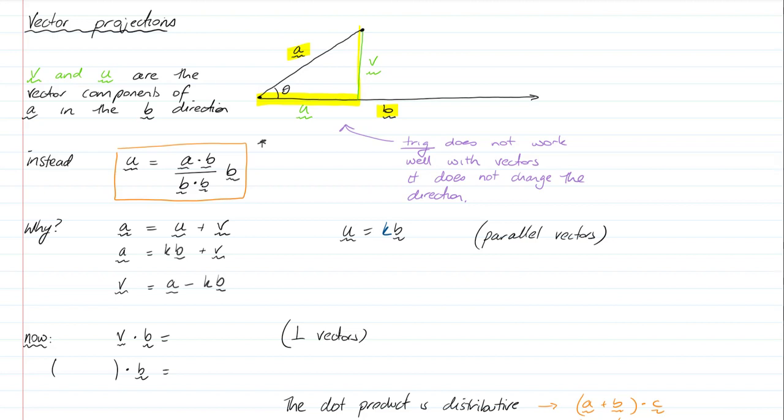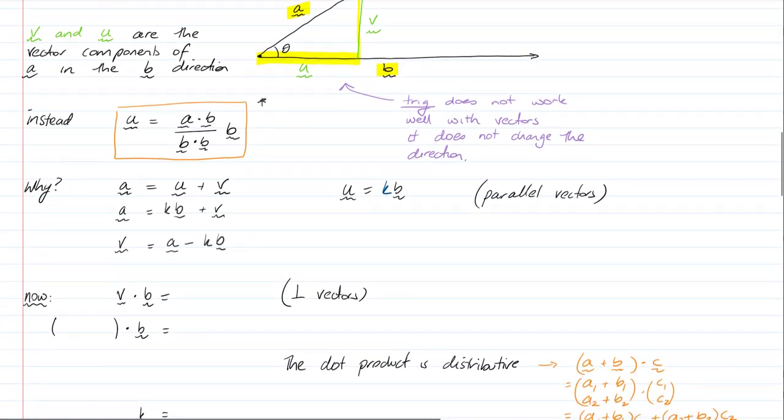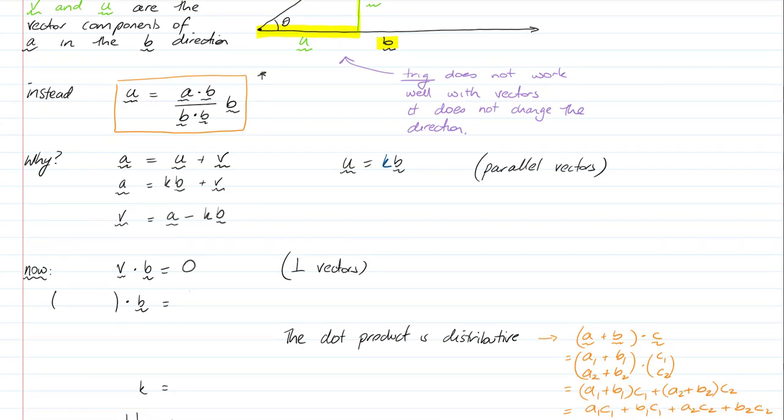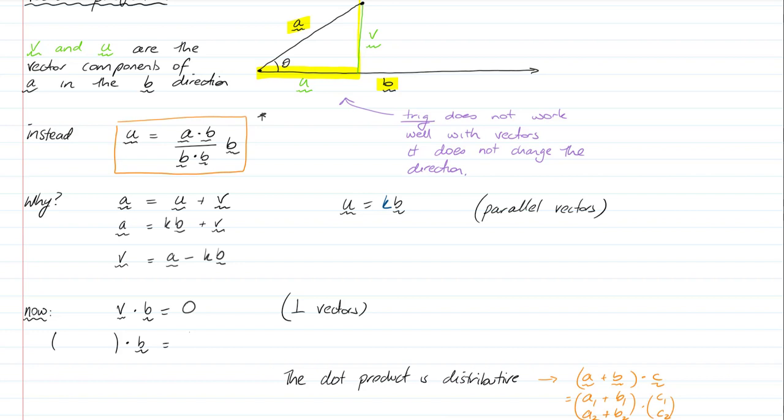Now, we can also do a multiple of V dot B. This is just basic arithmetic applied in a vector sense. V dot B, we know, is equal to zero. We know that because V is perpendicular to B. This is the way that I've set up my vector projection here. V is perpendicular to B. I've basically rotated that around to make that happen.